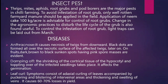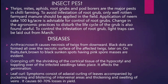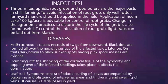Diseases. Anthracnose — it causes necrosis of twigs from downward; black dots are formed all over the necrotic surface of affected twigs. On fruits, dark brown to black sunken spots having pink spore masses are evident. Damping off — shrinking of the cortical tissue of the hypocotyl and toppling over of infected seedlings take place; it affects germination. Leaf curl — symptoms consist of adaxial curling of leaves accompanied by puckering and blistering of interveinal areas and thickening and swelling of veins. It causes 60 to 70% losses in yield.